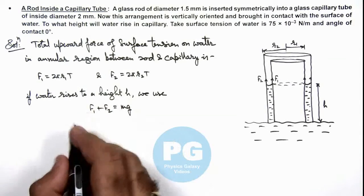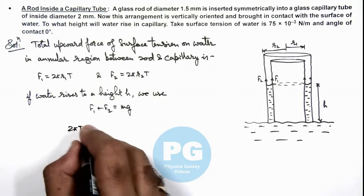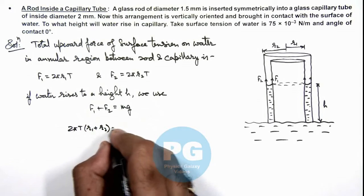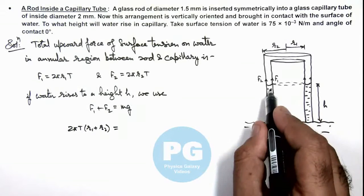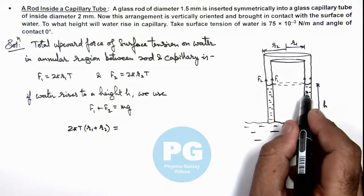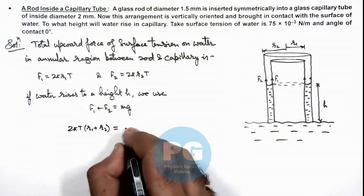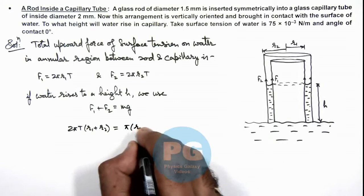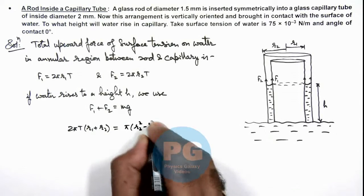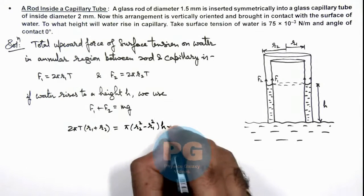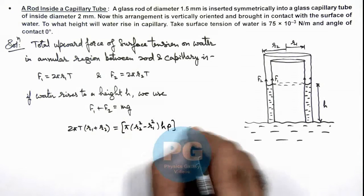So these forces we can write here as 2πT(r₁ + r₂) is equal to the mass of water which is raised in the annular region, which is volume multiplied by density. So this can be written as π(r₂² - r₁²) multiplied by h multiplied by ρ times g.